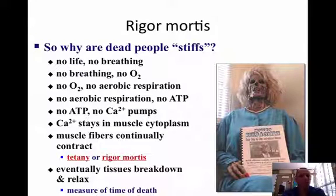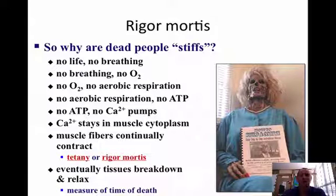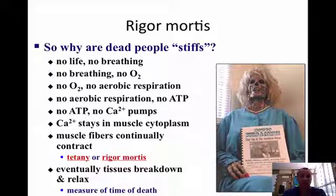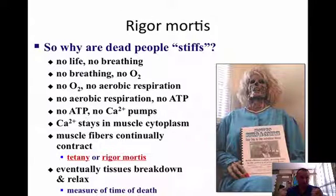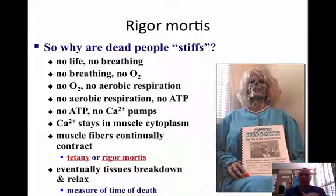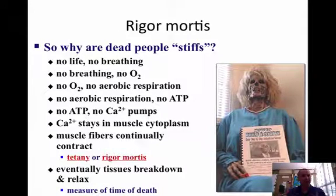The last thing I wanted to mention was rigor mortis. Why are dead people stiff? No life means no breathing. No breathing means no oxygen. No oxygen means no aerobic respiration. No aerobic respiration means no ATP. No ATP means no calcium pump. Calcium stays in the muscle — in the cytoplasm — therefore the muscle fibers are going to continually contract and stay tense. It's called tetany or rigor mortis. Eventually the tissues will break down and relax. This is actually how they measure how long someone has been dead — by how much rigor mortis they have.